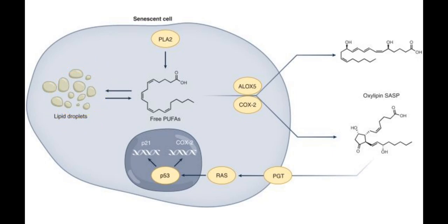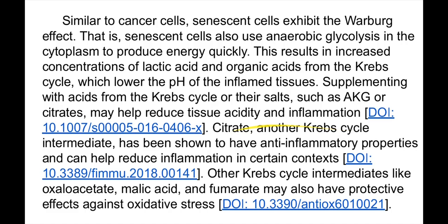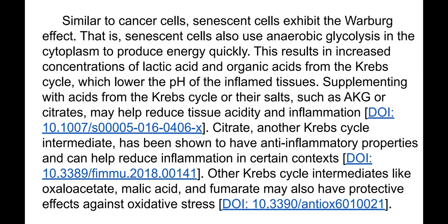Senescent cells are normally larger in size. We also see oxidation of poly-unsaturated fatty acids accumulated in lipid droplets and production of SASP. Similar to cancer cells, senescent cells exhibit the Warburg effect — that is, they also use anaerobic glycolysis in the cytoplasm to produce energy quickly.